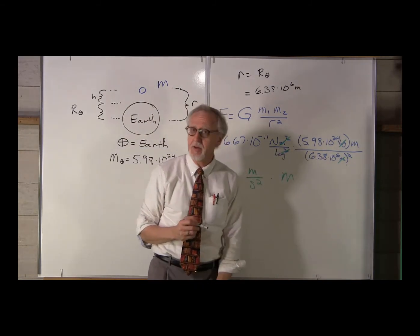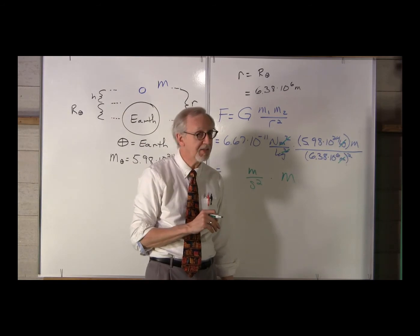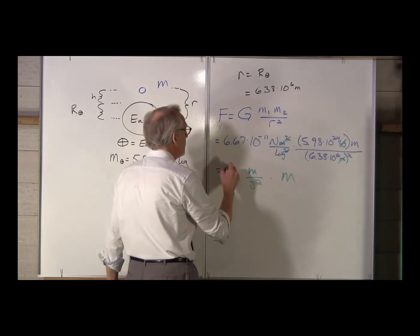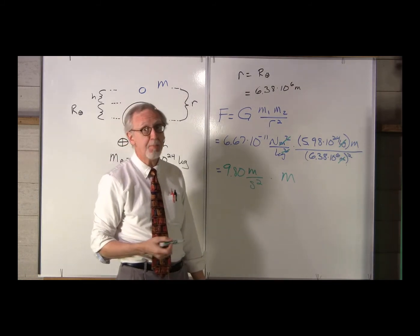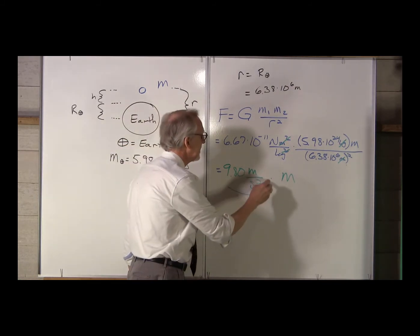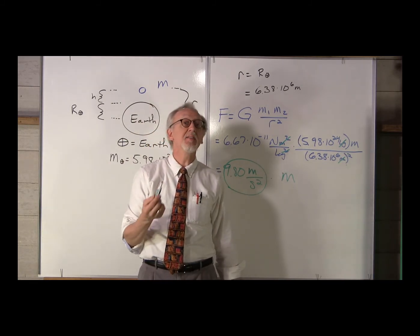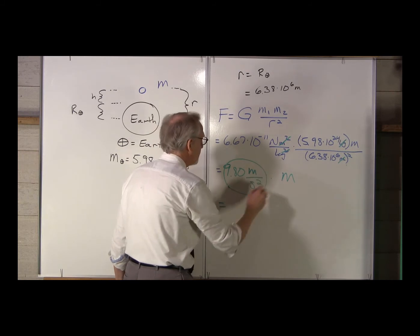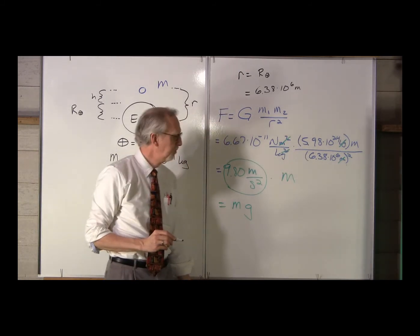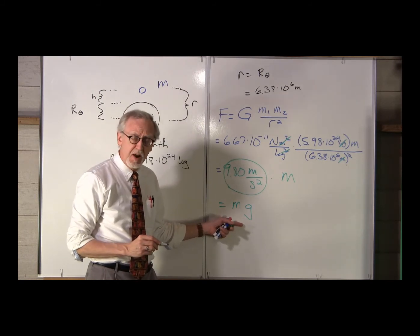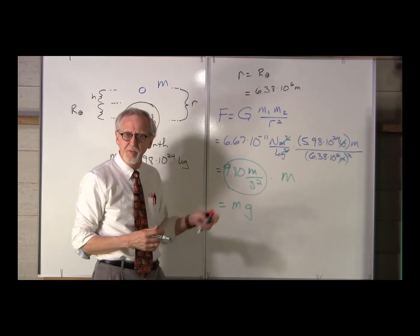Multiply this all out and what do you get? Well, you might be surprised. The value is 9.80 meters per second squared. We have seen that before. That is little g. This is the mass M times little g. Very, very interesting.